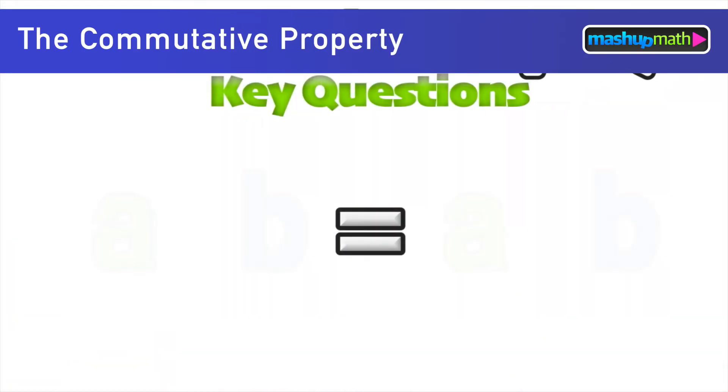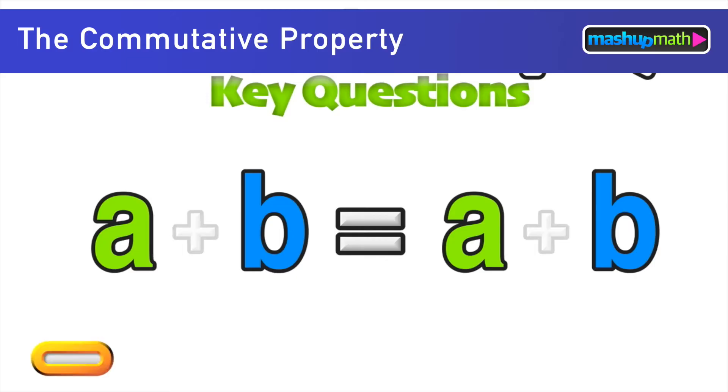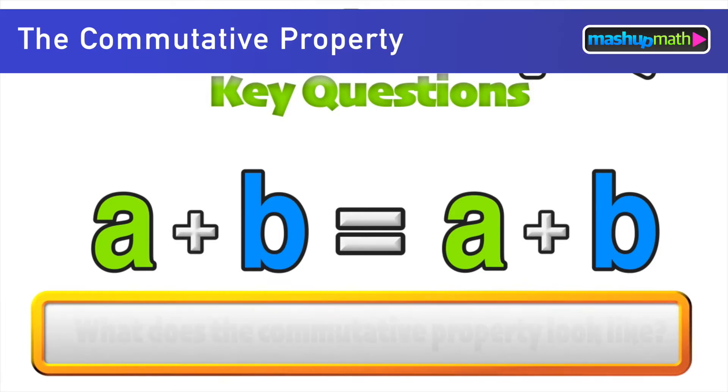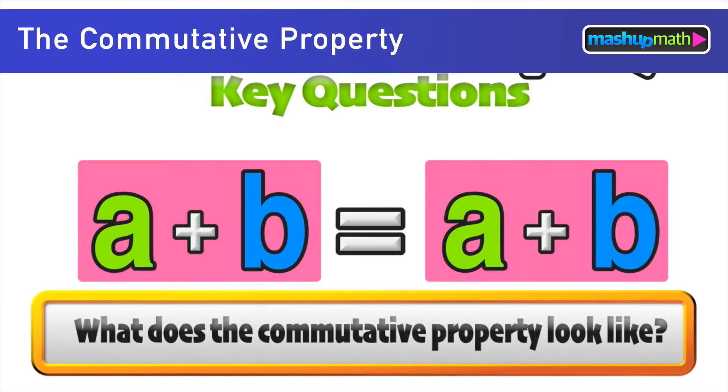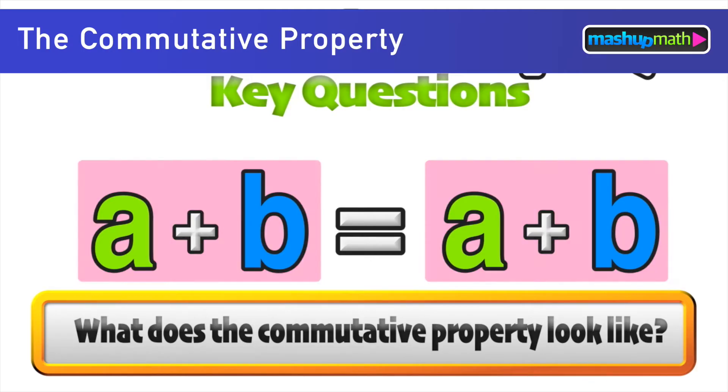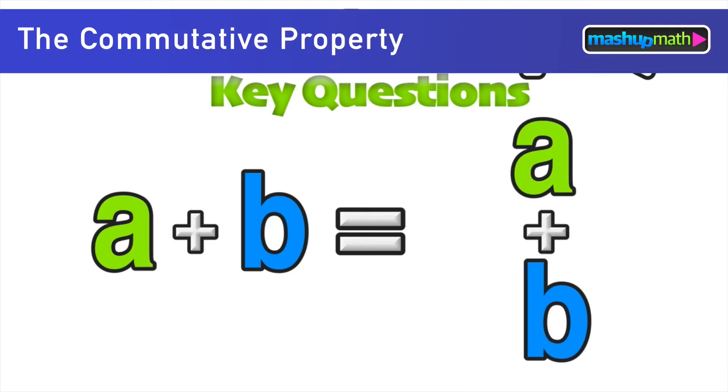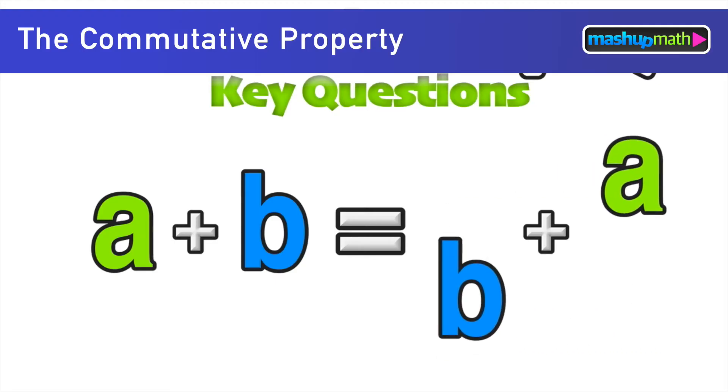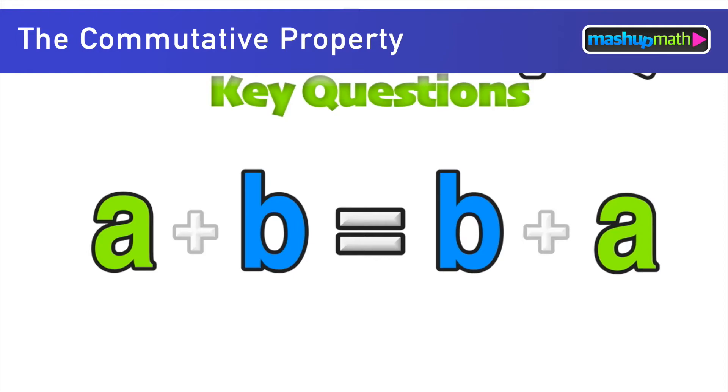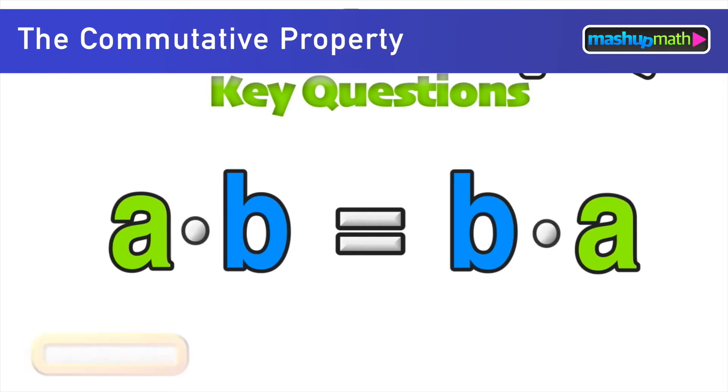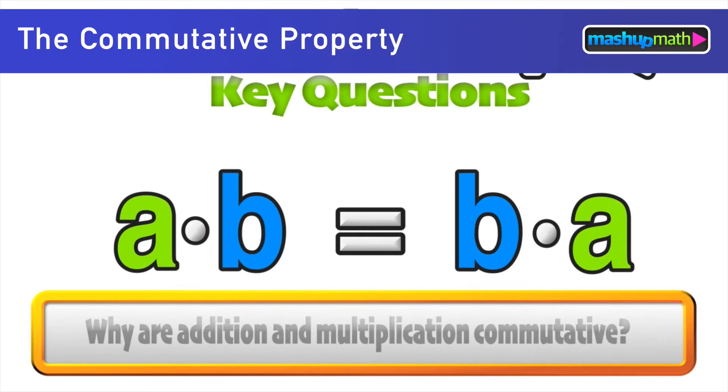So let's start off by looking at the sum of two terms. Here we have a and b, they could be any real numbers, and we want to know exactly what the commutative property looks like. For the commutative property we're just going to take those two terms and reverse the order. So now we have a plus b is equal to b plus a, and we're also going to see how this holds for multiplication where a times b equals b times a.